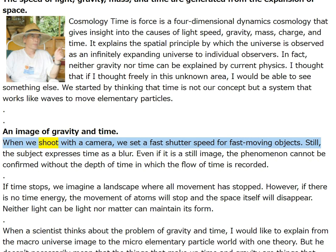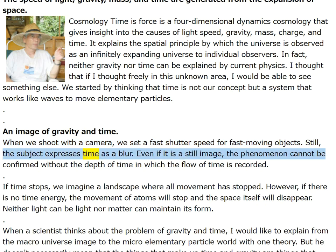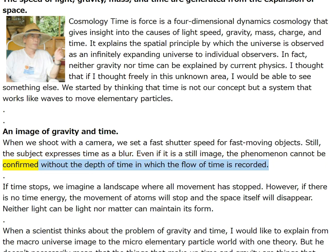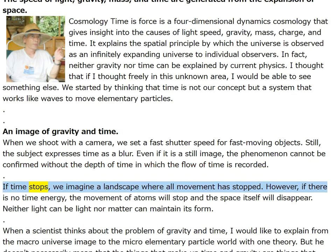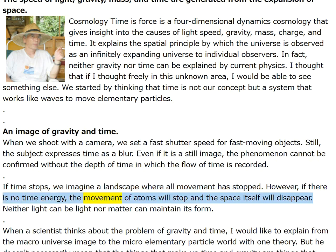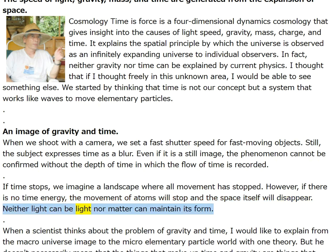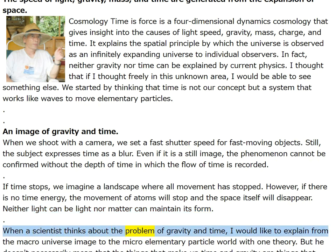When shooting with a camera, a fast shutter speed for fast-moving objects still expresses time as a blur. The phenomenon cannot be confirmed without the depth of time in which the flow of time is recorded. If time stops, all movement stops. However, if there is no time energy, the movement of atoms will stop and space itself will disappear — neither light can be light nor matter can maintain its form.